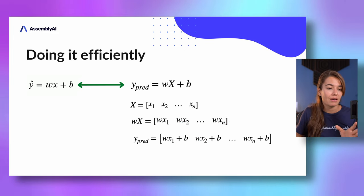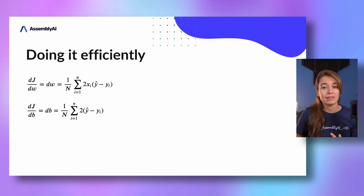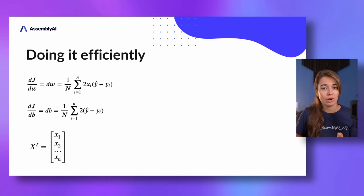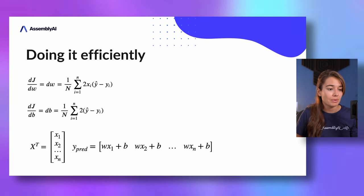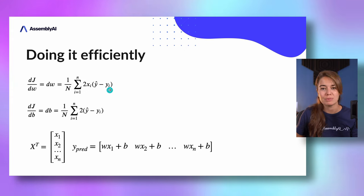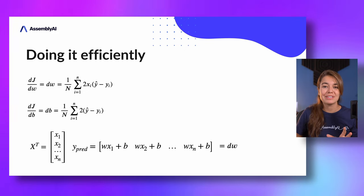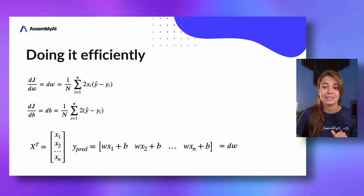The y predicted will be an array of predictions for all data points. When calculating the gradients, we can get all the x values, transpose the matrix so they're a column, and then take the dot product of that with the difference between y predicted and the actual y to calculate the derivative of the error function with respect to the weight. These are just references to make it easier while coding.